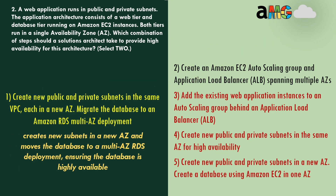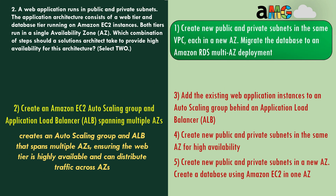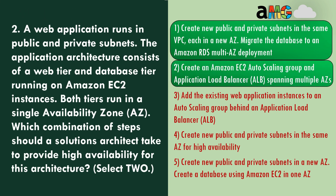Option 1 — create new public and private subnets in the same VPC, each in a new availability zone, and migrate the database to Amazon RDS Multi-AZ deployment. This creates new subnets in a new AZ and moves the database to a Multi-AZ RDS deployment, ensuring the database is highly available — correct answer. The second correct answer is to create an Amazon EC2 Auto Scaling group and Application Load Balancer spanning multiple availability zones, ensuring the web tier is highly available and can distribute traffic across AZs.